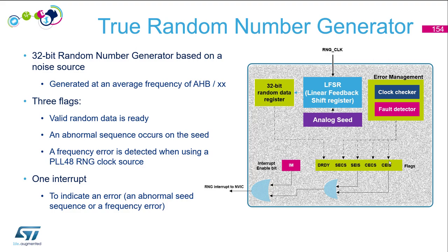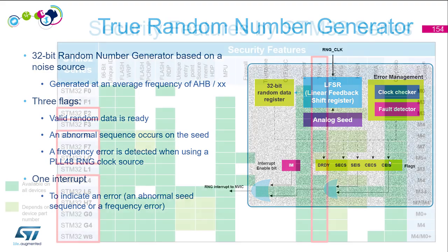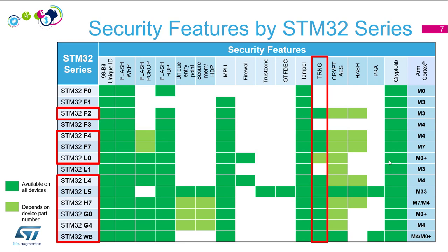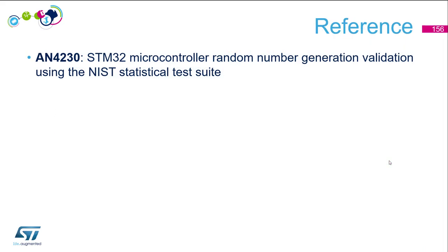Let's check the availability across the STM32 family. It's available on F2, F4, F7, L0 (but not on all parts), L4, L5, H7, G0, G4, and WB. As a reference, I invite you to have a look at Application Note AN4230, which is quite interesting.